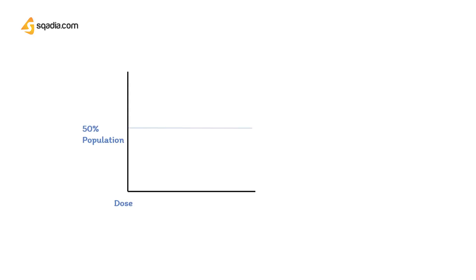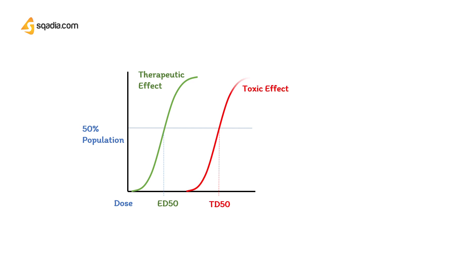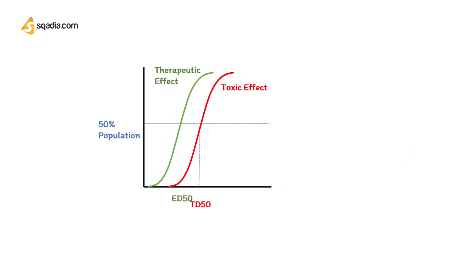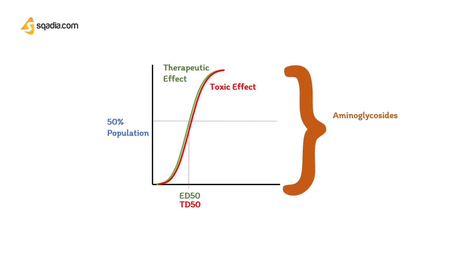The difference between the dose necessary for treatment and the dose that actually causes harm is generally large. This is known as the therapeutic index. The aminoglycosides are exceptions to this because doses just above the therapeutic level can be toxic.